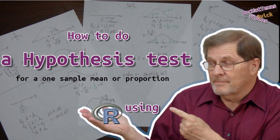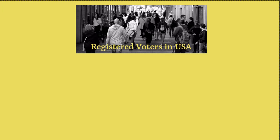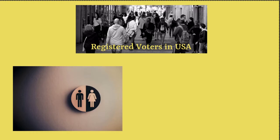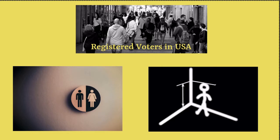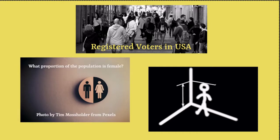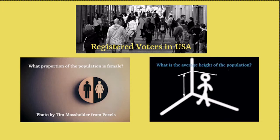Module 7 looks at two kinds of hypothesis tests: one-sample mean and one-sample proportions. To illustrate each of these, consider the registered voters in the United States. One variable we might want to consider is gender — that's an example of a categorical variable. Another variable of interest might be how tall the individuals are — that's a numerical variable. A parameter associated with the categorical variable would be what proportion of the population is female. A parameter associated with height might be what is the average height of the population.